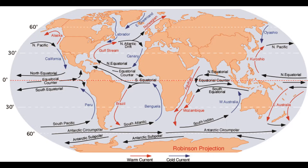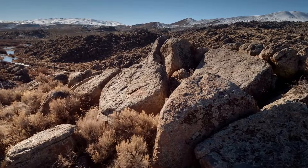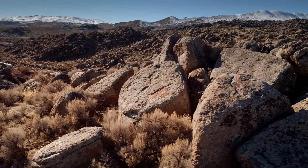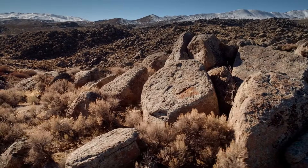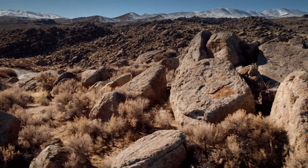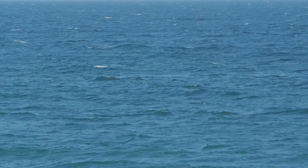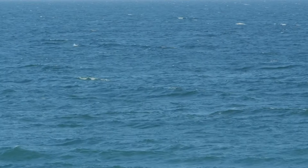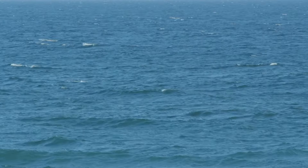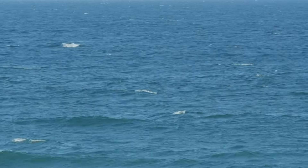On the opposite coast, the cold California current influences its western Pacific shoreline by bringing cold, moist air. The reason California isn't a desert like its neighboring states Arizona and Nevada is because the cold current lowers air temperatures as it flows around the coast.